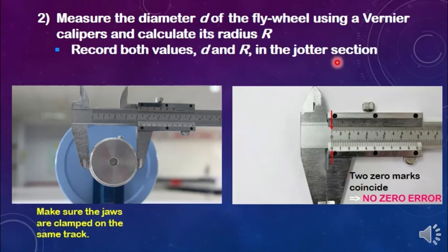Before using the vernier caliper to measure the diameter of the axle of the flywheel, please check for any zero error. Make sure the jaws of the vernier caliper are fully closed. Since the two zero marks on the main scale and on the vernier scale coincide to each other, these vernier calipers do not have zero error.